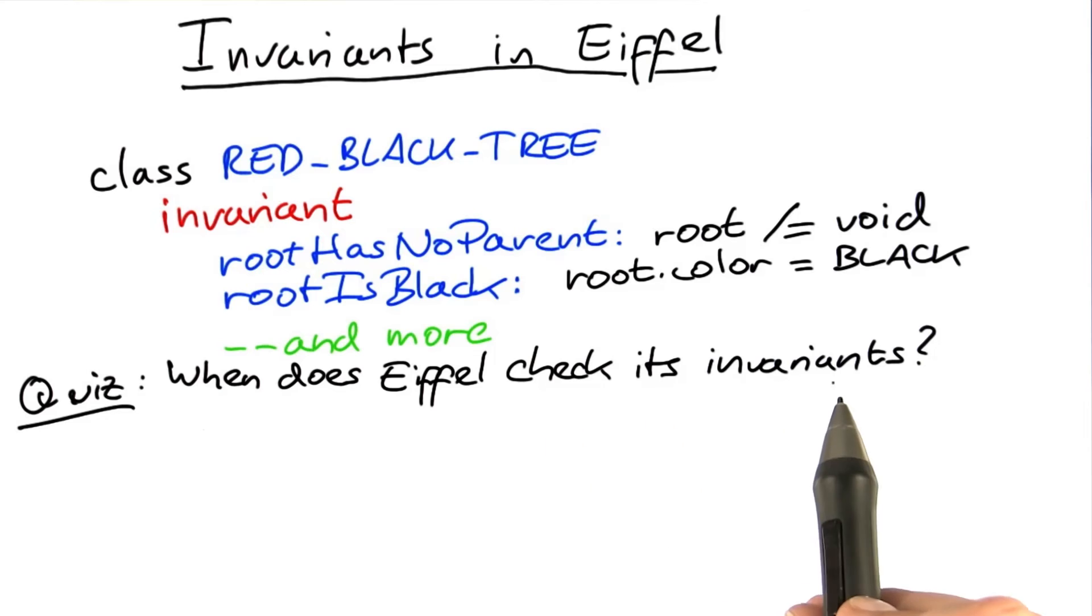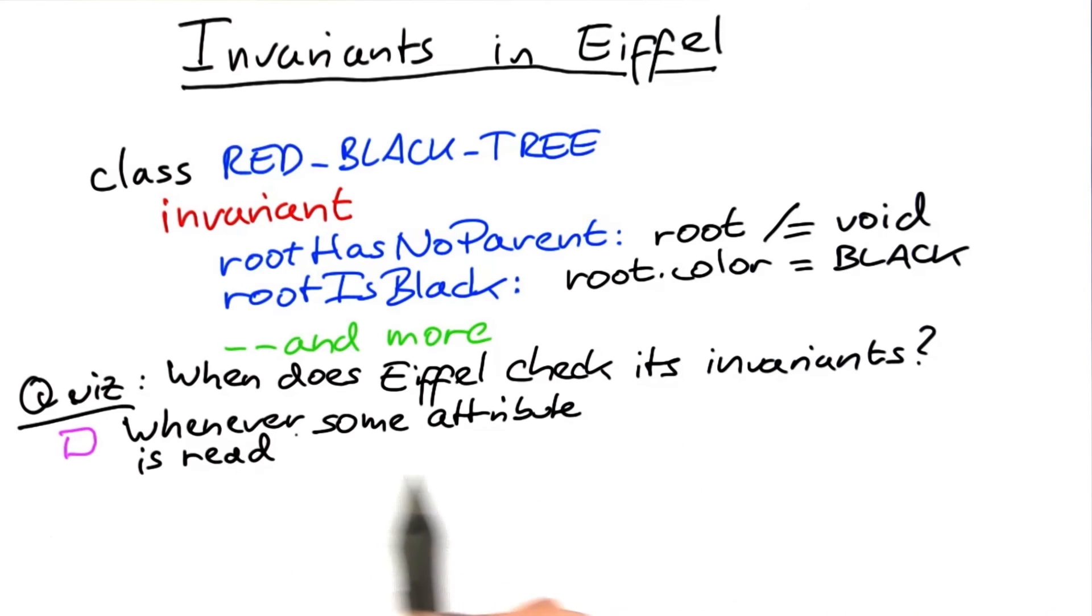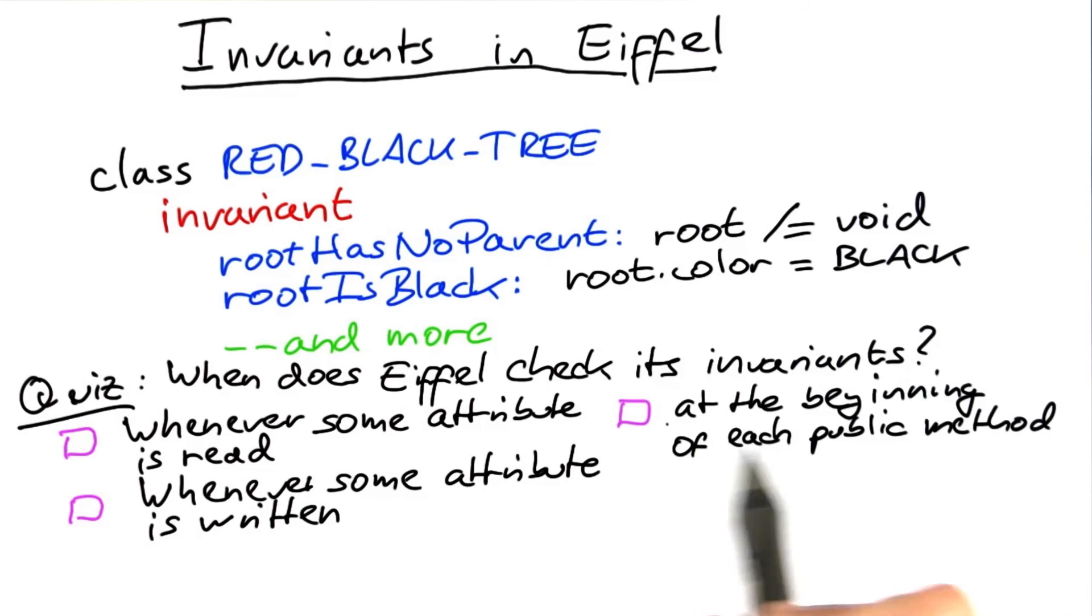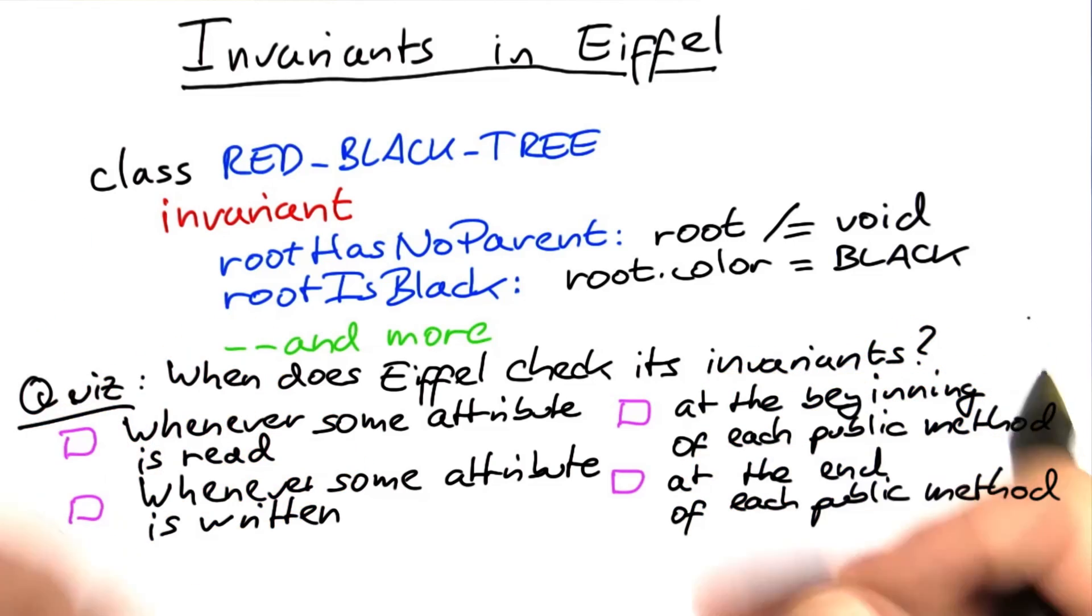So, when does Eiffel check its invariants? Is it whenever some class attribute is read? Whenever some attribute is written? At the beginning of each public method in the class? Or is it at the end of each public method? Check all that apply.